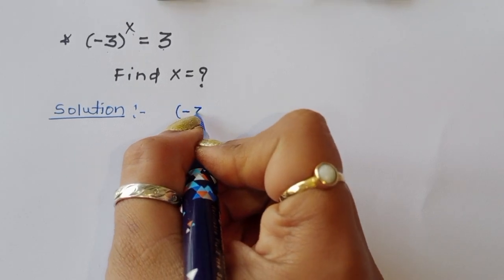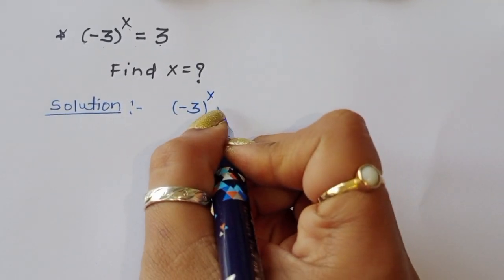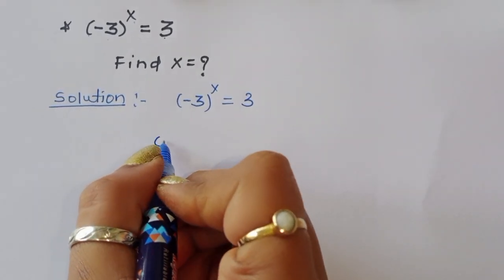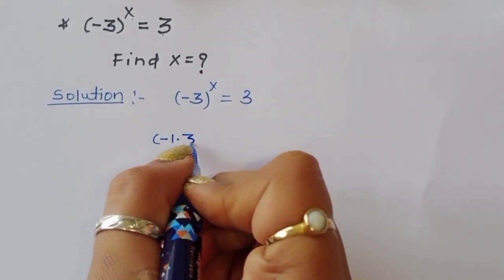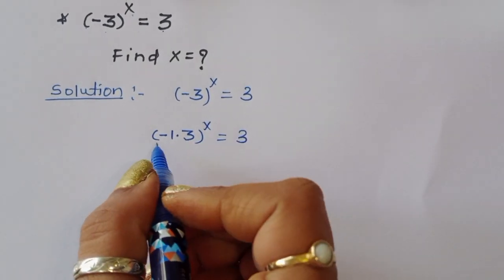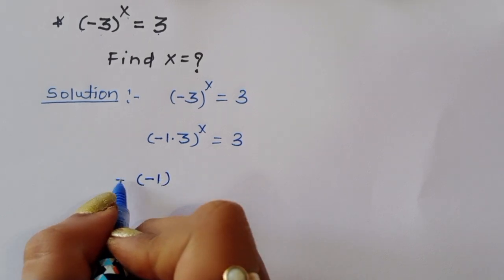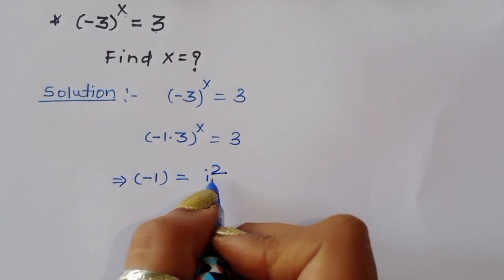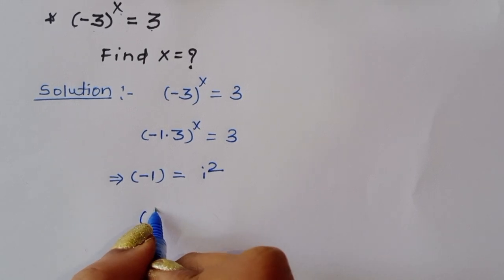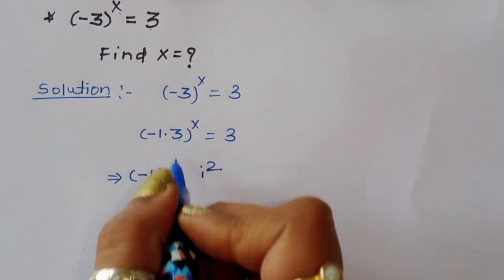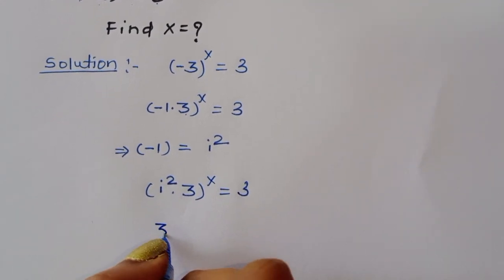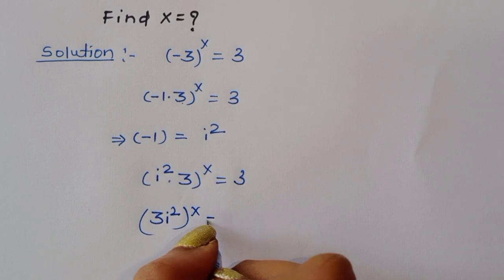The question is minus 3 to the whole power of x is equal to 3. We can write this as minus 1 times 3 to the power x, equal to 3. We know that minus 1 is equal to i squared. So we can substitute i squared here, and it will become i squared times 3 to the power x equals 3, or we can write this as 3i squared to the power x equals 3.